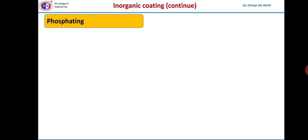What is phosphating? Basically a development of a phosphate layer on the surface by the reaction of metal with dilute phosphoric acid solution is called phosphating.